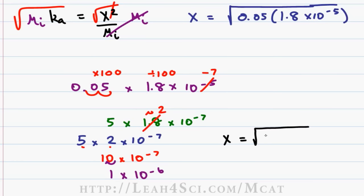Now going back to the original question we have x equals square root of 1 times 10 to the minus 6. We want to take the square root of the number and the square root of the power and put it together. The square root of 1 is 1 so that's easy.